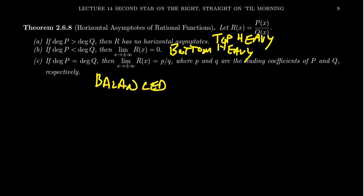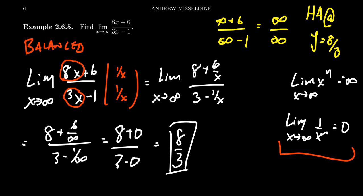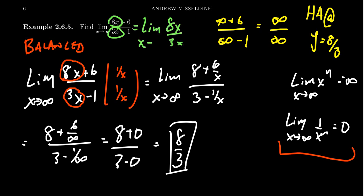These rules let you simplify these calculations quickly. For a polynomial, you just look at the leading dominant term. For a ratio, you do the same — take the leading term on top and the dominant term on the bottom. So for the limit of 8x plus 6 over 3x minus 1, this limit is the same as 8x over 3x as x approaches infinity. The x's cancel, and you get 8 thirds.